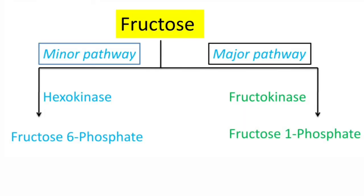Like glucose, there is no separate pathway for fructose metabolism, but a few reactions will convert fructose into one of the intermediates of glycolysis. So after that, it is metabolized through the reactions of glycolysis. There are two ways fructose is metabolized: minor pathway and major pathway.